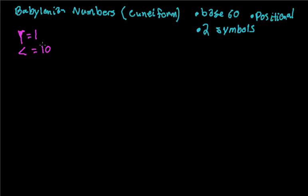You may be wondering how we can represent large numbers, because if the biggest thing we can write is 10, we would have to write 100 of these to make 1,000. But it's actually a lot easier to represent large numbers than you would think with this kind of system.